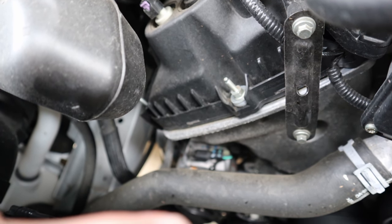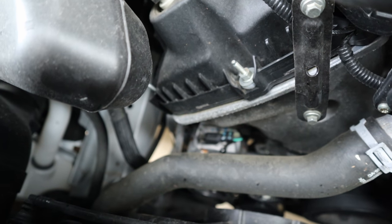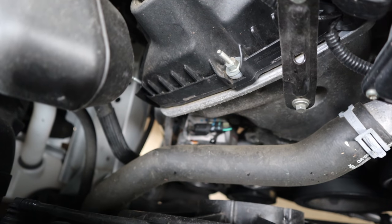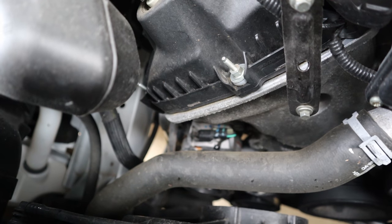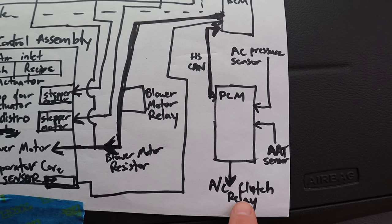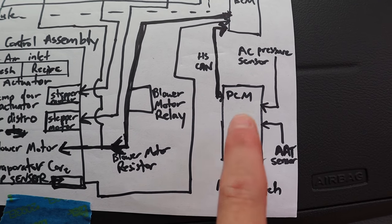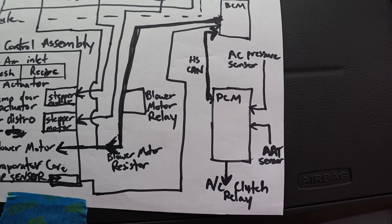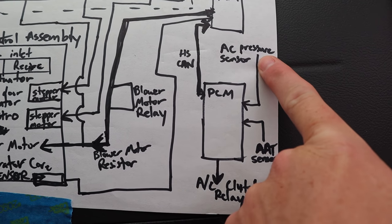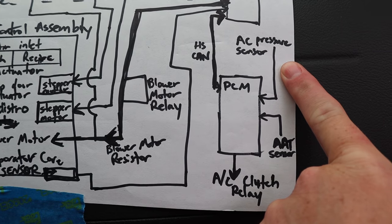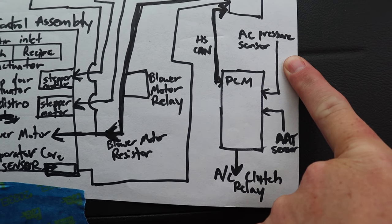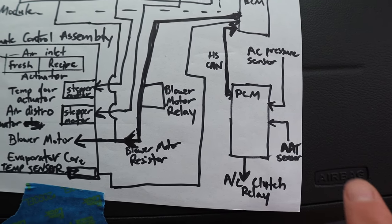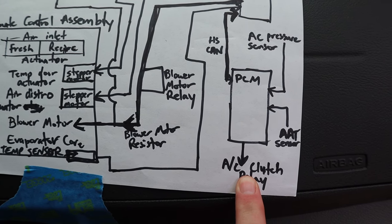The AC compressor has a magnetic clutch mechanism. When the coil energizes, the belt spinning the pulley will engage with the AC compressor and they work as a unit — the belt starts to turn the AC compressor. Part of the PCM's logic involves the AC pressure transducer, a sensor on the high side of the refrigerant line. If it reports too low or too high pressure, the clutch relay will not be engaged.